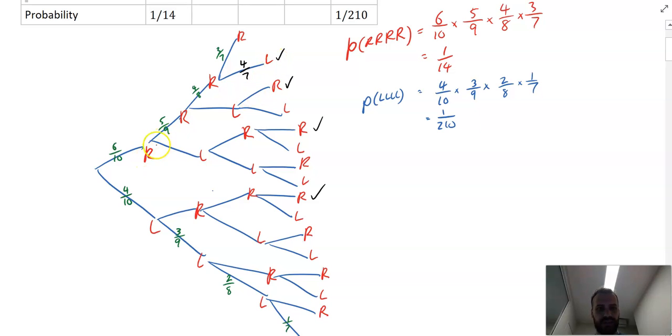The next one, let's look at this one here, RRLR. That's going to be six in ten, five in nine, and then four in eight, because there's four left-handers left out of eight. And then the next one's going to be an R. There's four R's left, so it's going to be four in seven. An interesting thing happens with those two. Look at the numerators first of all. Six, five, four, four. Look at the numerators of the next one. Six, five, four, four. Look at the denominators of them both. Ten, nine, eight, seven, ten, nine, eight, seven. The numerators are all the same, the denominators are all the same. If you multiply down both of those, you're going to get the same result.